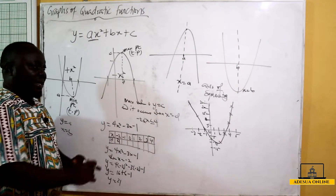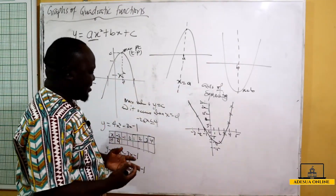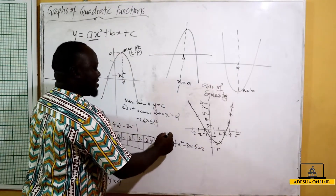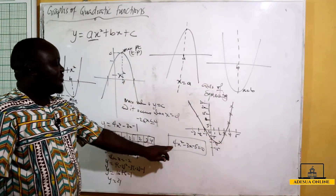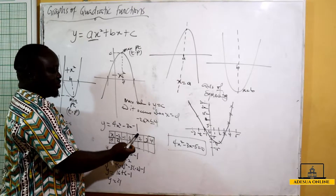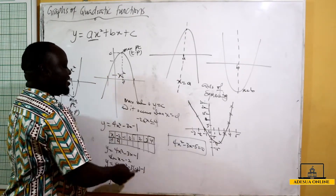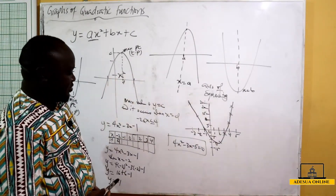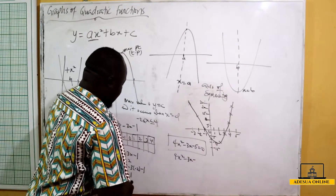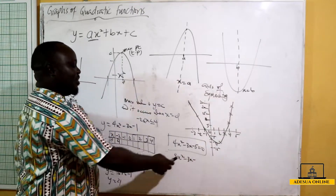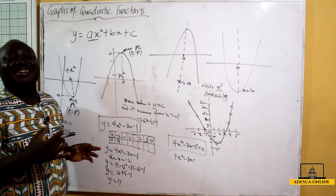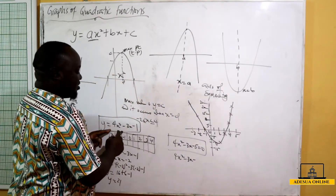After drawing the curve, a sub-question might ask you to use the graph to solve 4x² - 3x - 5 = 0. We notice our graph is of y = 4x² - 3x - 1, but the equation to solve has -5 instead of -1. So we need to manipulate the equation to make it match the graph we drew.